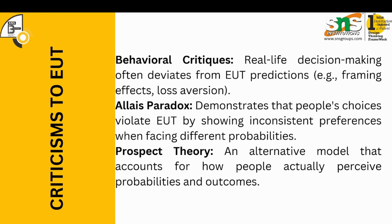There are several criticisms of EUT. First, behavioral critics note that real-life decision making often deviates significantly from EUT's predictions. Second, the Allais paradox demonstrates that people's choices violate EUT by showing inconsistent preferences when facing different probabilities. Third, and most importantly, prospect theory offers an alternative model that accounts for how people actually perceive probabilities and outcomes.